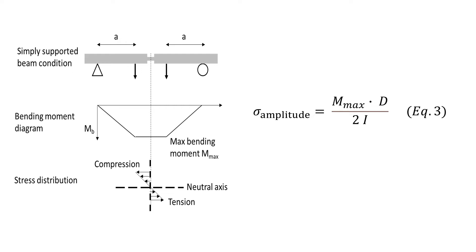The moment of inertia is calculated as: I = π D⁴ / 64. When the bar rotates during the test, a region of material keeps changing its relative location to the neutral axis. This causes the stress condition to keep switching between tension and compression, with a cyclic stress profile over time similar to a sine wave.